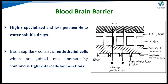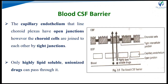The blood-brain barrier is highly specialized and less permeable to water-soluble drugs. Brain capillaries consist of specific endothelial cells joined by continuous tight intercellular junctions, which restrict drug passage to the brain. The BBB is a highly lipoidal barrier, allowing only drugs with high partition coefficient or highly lipophilic nature to diffuse passively. The blood-CSF barrier is similar, but here the choroid plexus capillary endothelial cells have open junctions while choroid cells are joined by tight junctions; only highly lipid-soluble unionized drugs cross.